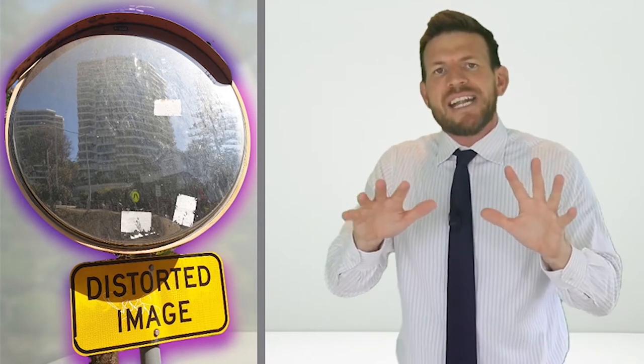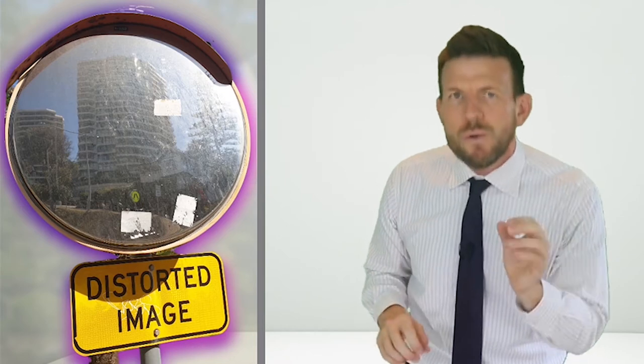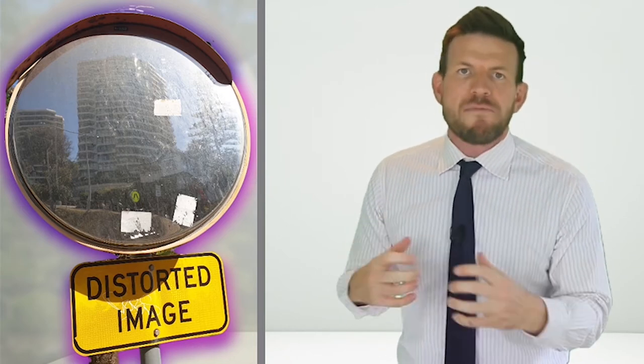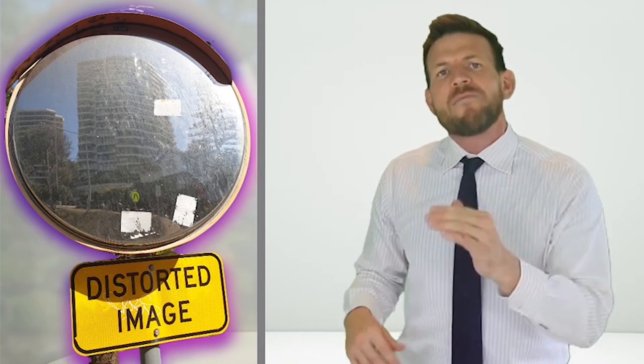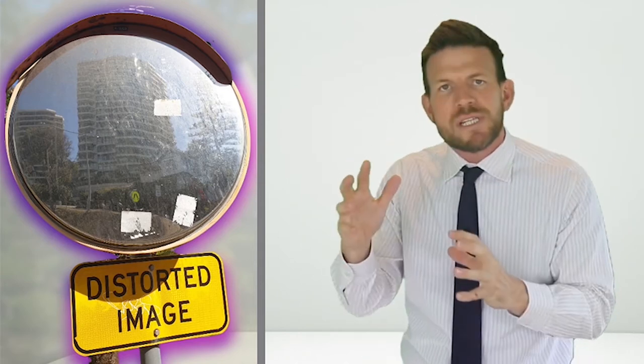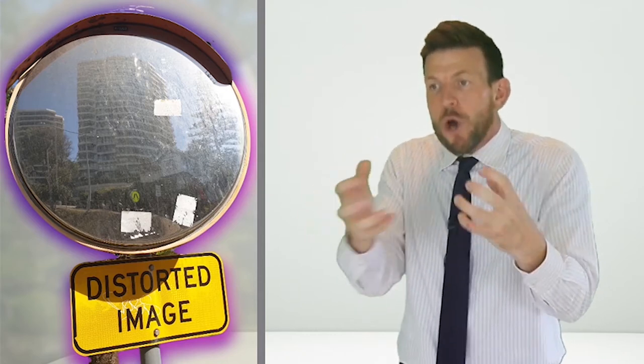He made me aware that my thought life, the way I was thinking specifically about myself, was happening because I had this hugely distorted image of me and who I was. And since that day, I've realized that one of the major issues we have in modern society is that so many of us look at ourselves through a very distorted image. We have a distorted lens and view of who we are.